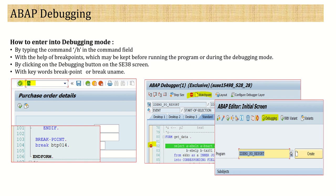A very common way is by typing slash h in the command field. As you can see in this screenshot, for example, we have this program and this T-code. If you want to debug this program from the same screen, just type slash h and after that if you execute, the program will run in debugging mode.